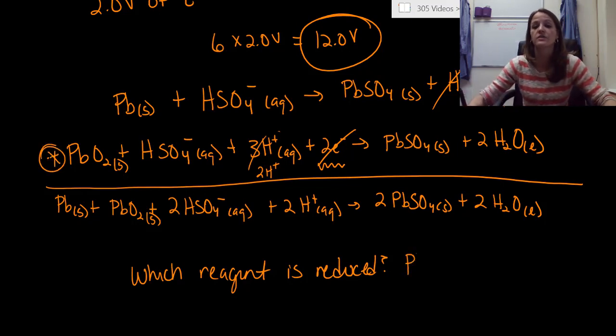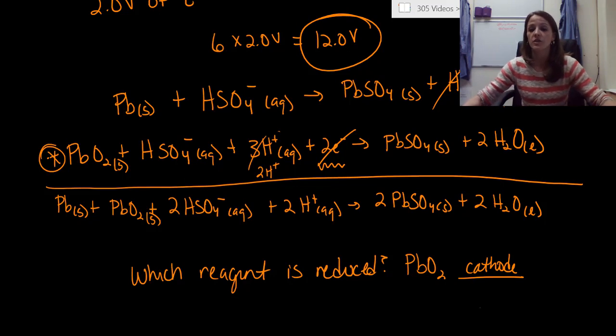We know reduction occurs at the cathode, so if I'd asked you about the cathode, you would have been able to answer that. Which means alternatively, the anode is the oxidation reaction and that is definitely your solid lead.